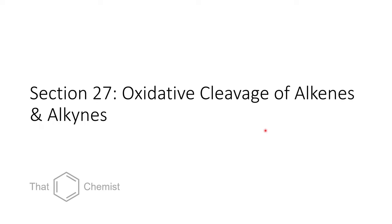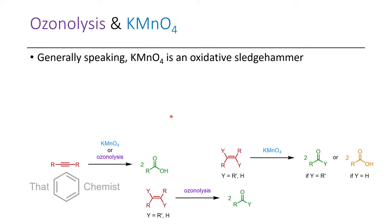With that, let's get to today's material: oxidative cleavage of alkenes and alkynes. While previously we've discussed adding epoxides to alkenes, it's possible to go further and oxidize the alkene or alkyne to carbonyl-containing compounds. There are two approaches commonly used: ozonolysis as well as potassium permanganate.